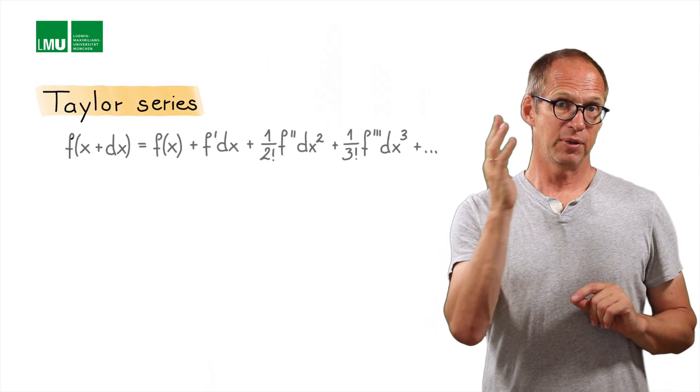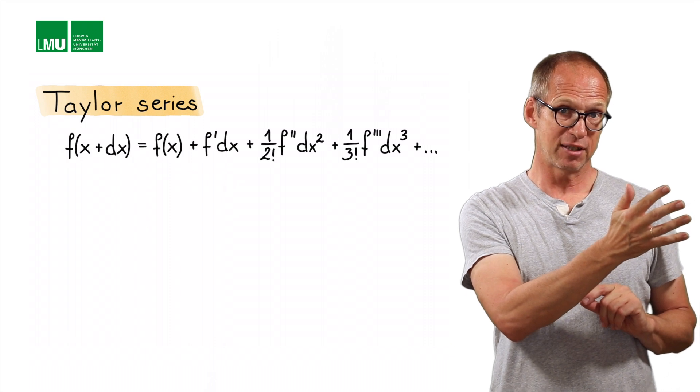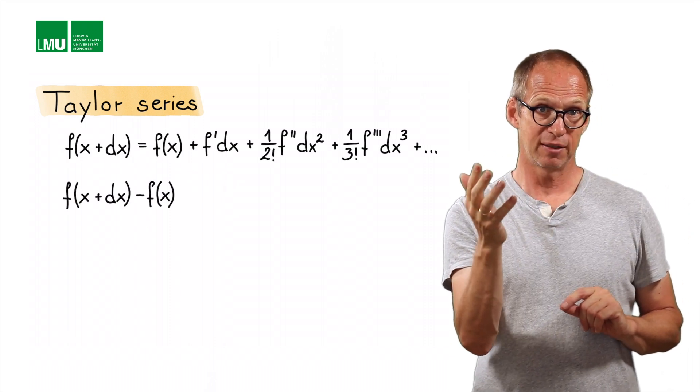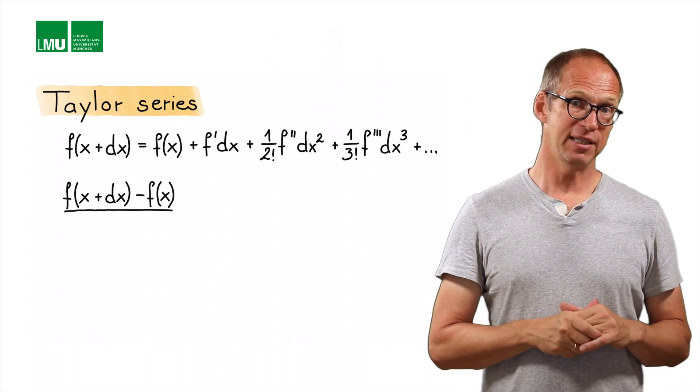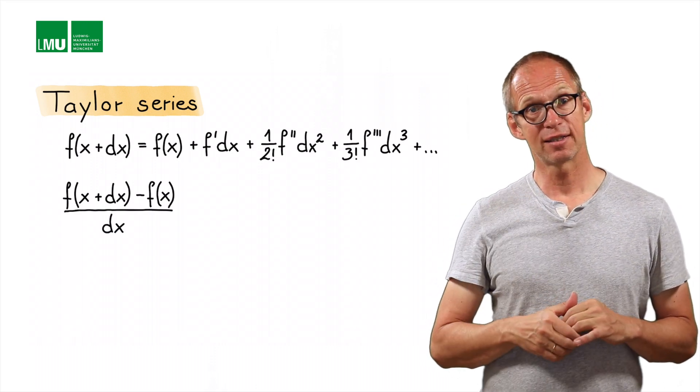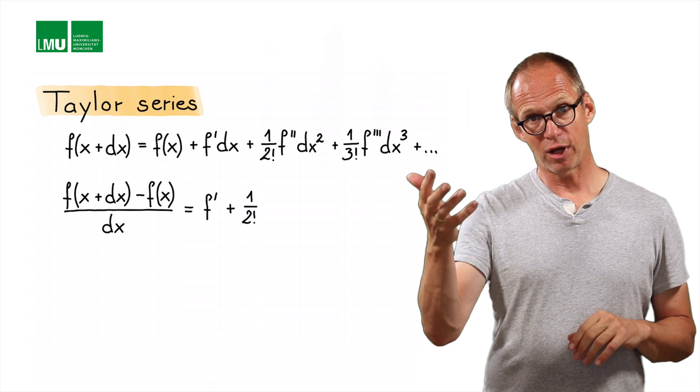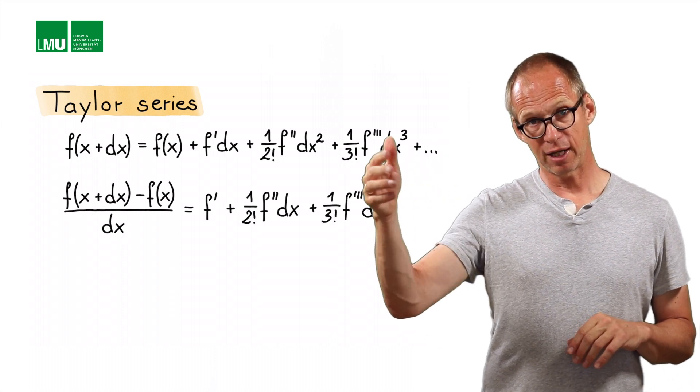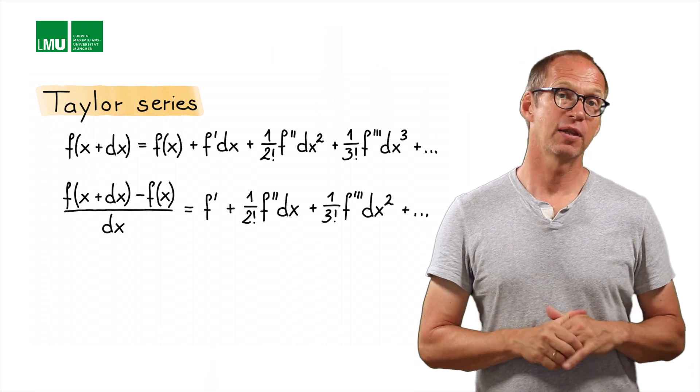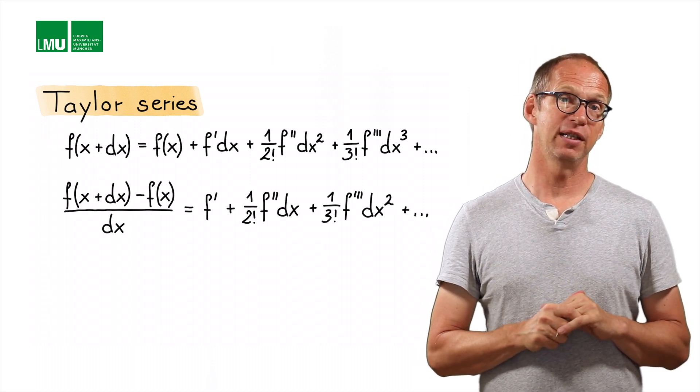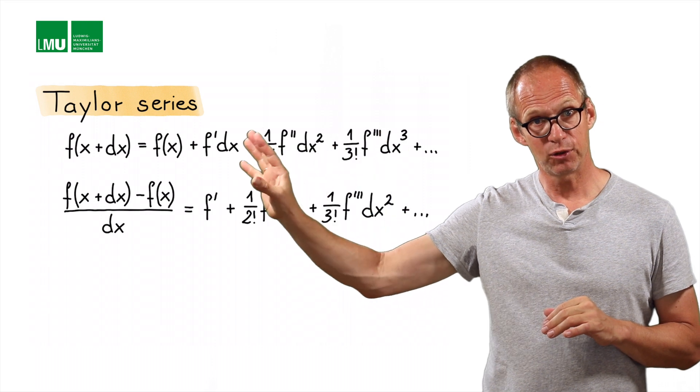Let's start with the original definition. We have f of x plus dx on the left hand side. We subtract f of x and divide by dx. Then we're left on the right hand side with f prime, which is the first derivative, plus some additional terms. Now, what happens if we neglect these additional terms?